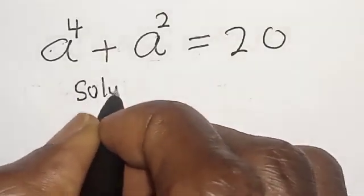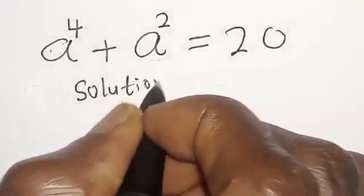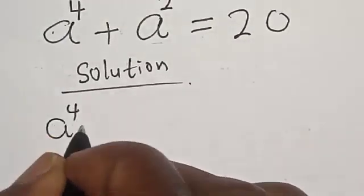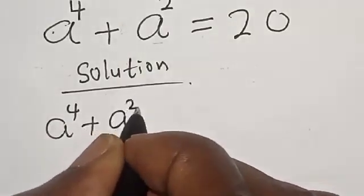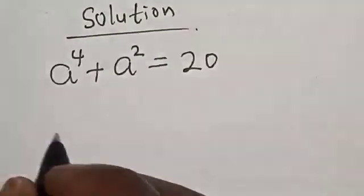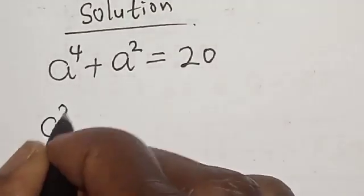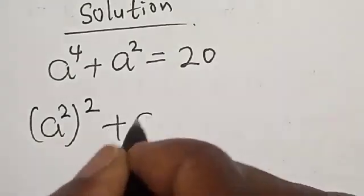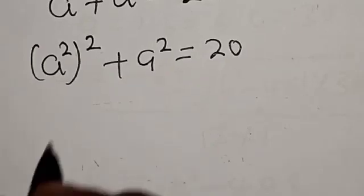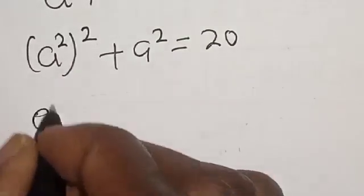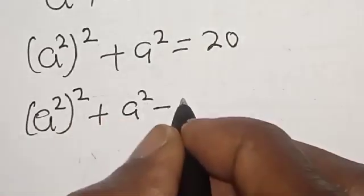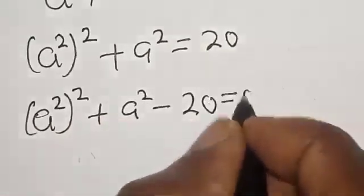Solution. We have the given equation a^4 + a^2 = 20. Now a^4 can be written as (a^2)^2, so (a^2)^2 + a^2 = 20. Rearranging, we have (a^2)^2 + a^2 - 20 = 0.